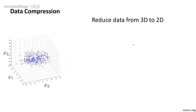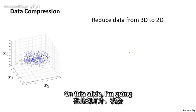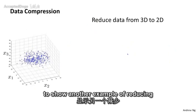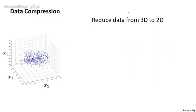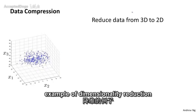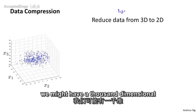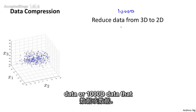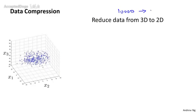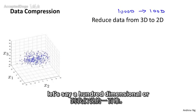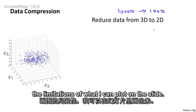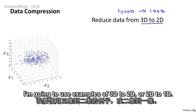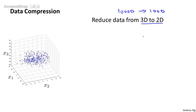On the previous slide, we showed an example of reducing data from 2D to 1D. Now we're going to show another example of reducing data from three-dimensional 3D to two-dimensional 2D. In a more typical example of dimensionality reduction, we might have a thousand-dimensional data that we want to reduce to, say, a hundred dimensions. Because of the limitations of what I can plot on this slide, I'm going to use examples of 3D to 2D or 2D to 1D.